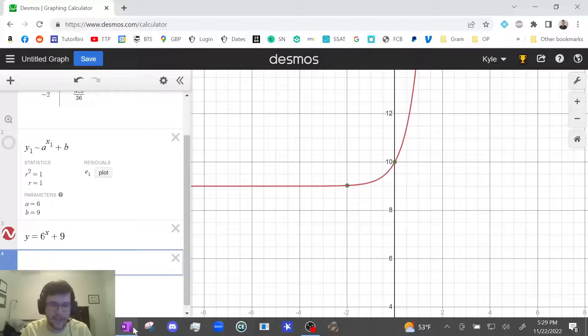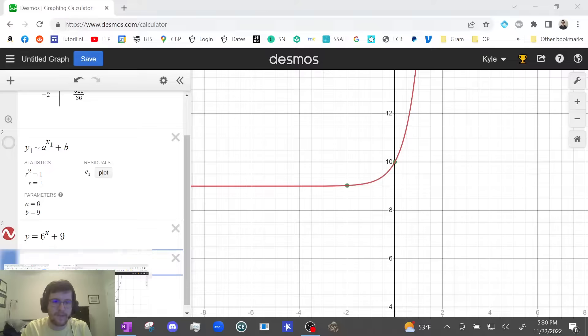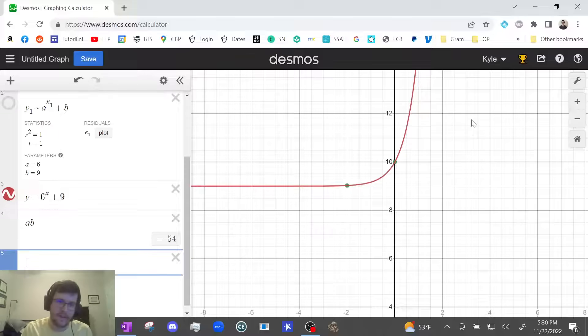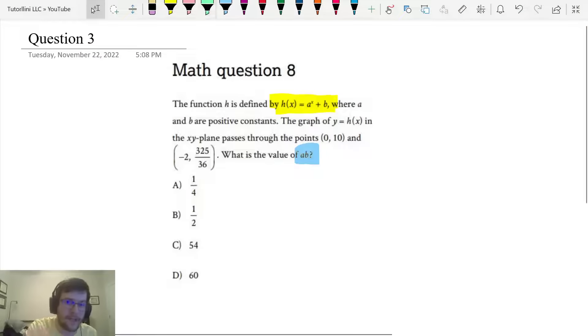All right. And the question, if you didn't notice—probably should have pointed this out—it says what is the value of AB? So, AB is 54. That is incredibly helpful. That is answer choice C. Wow. Not only did we improve our consistency on this question, our chances of getting it right, but we just saved probably a minute to two minutes that we can now use on much harder challenging questions.